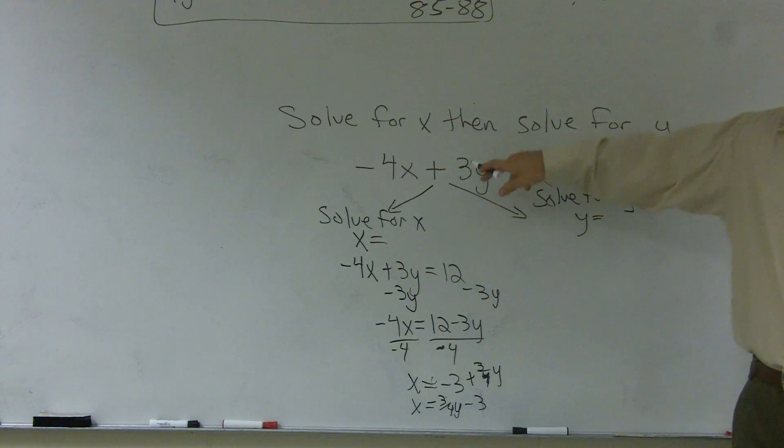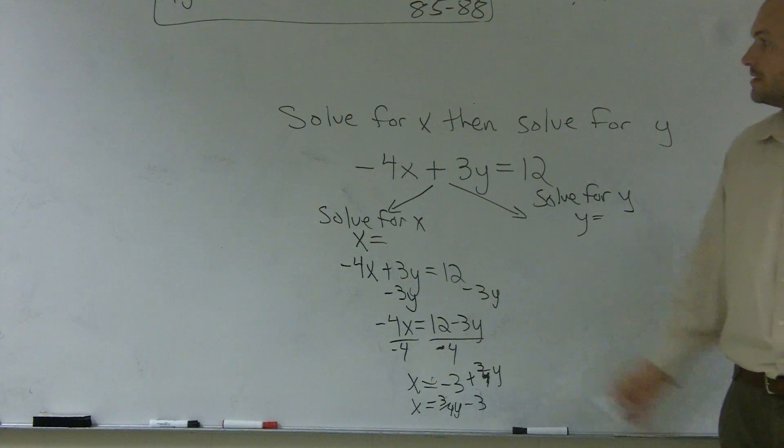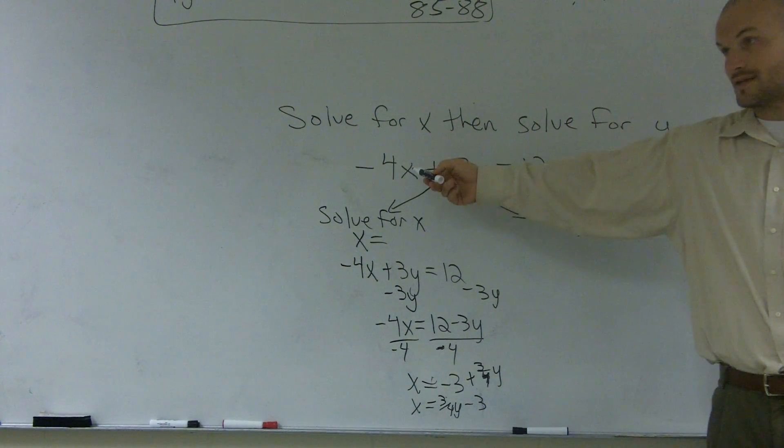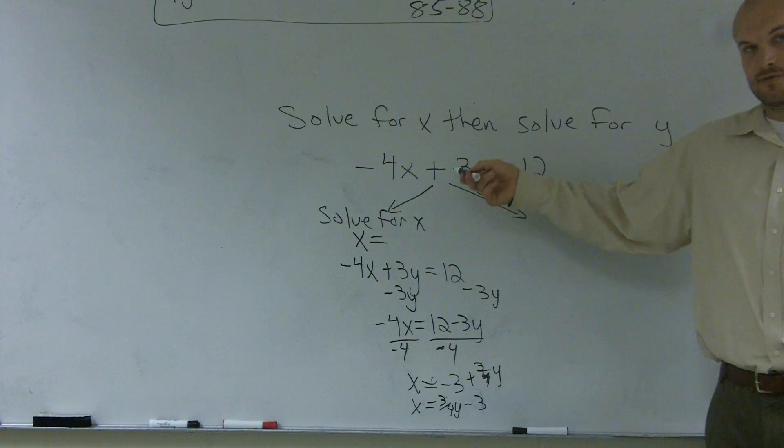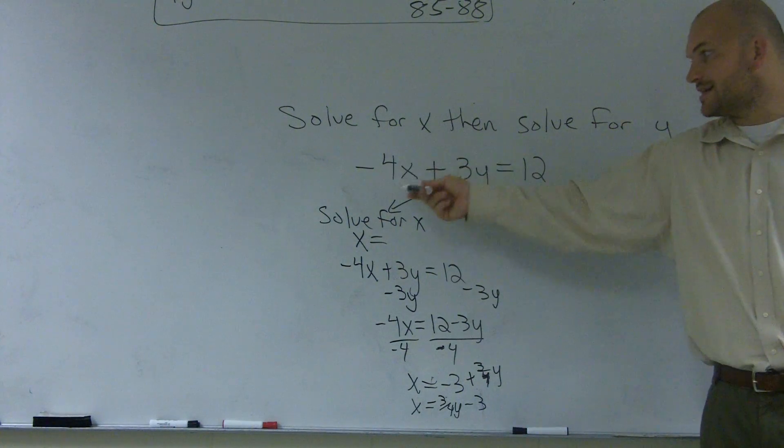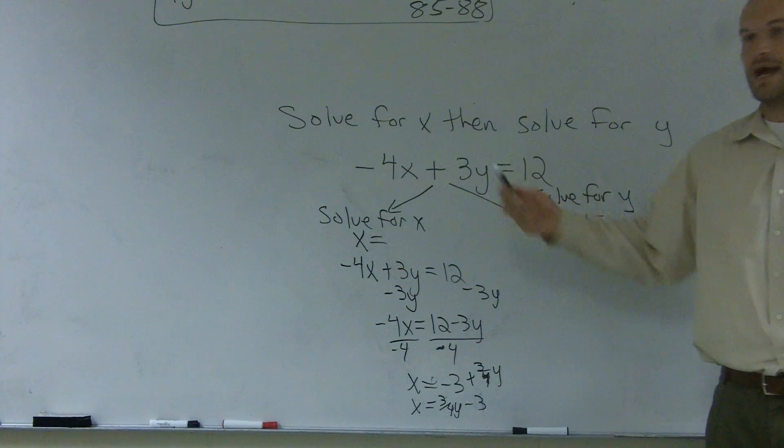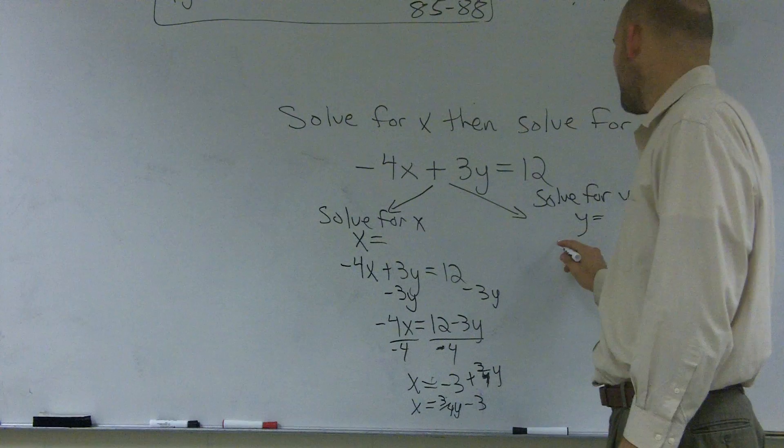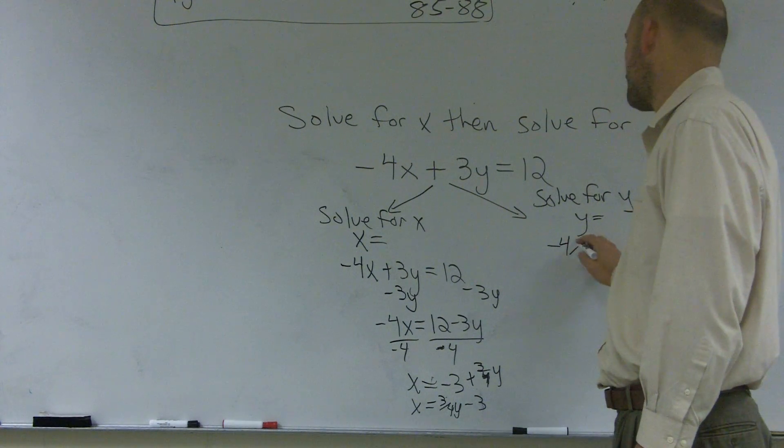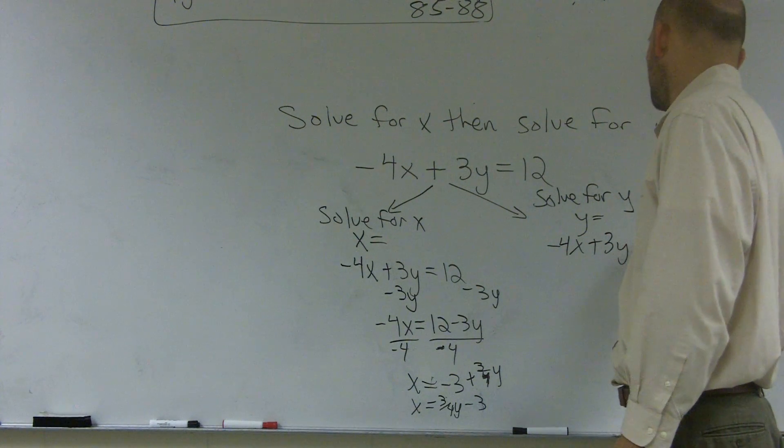So we look at y and we say, what is happening to the y? Well, it's being subtracted by 4x and it's being multiplied by 3. So to get rid of that 4x, I need to add 4x. So I have negative 4x plus 3y equals 12.